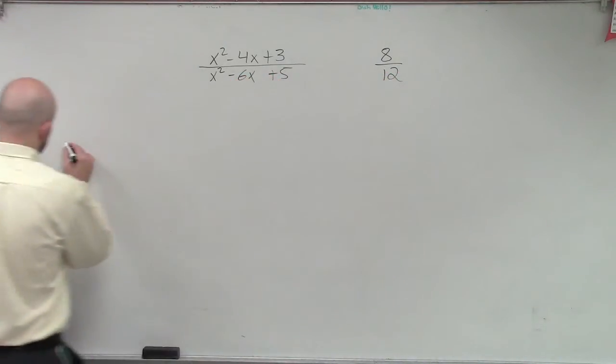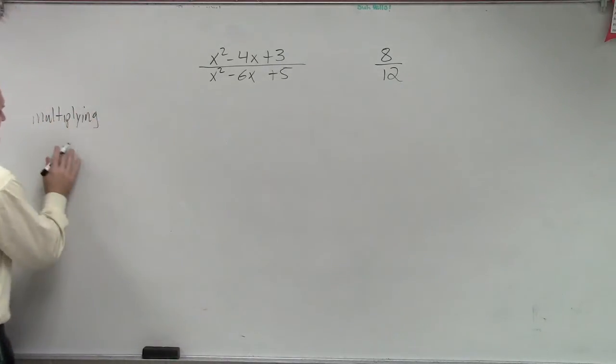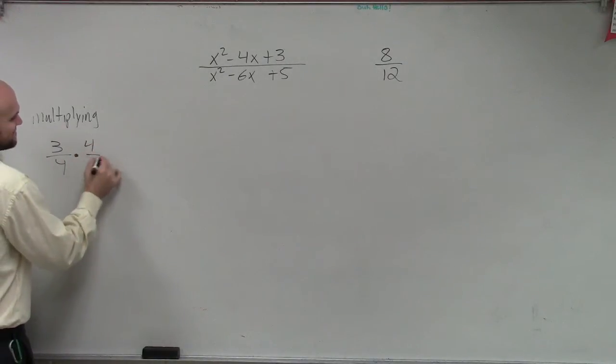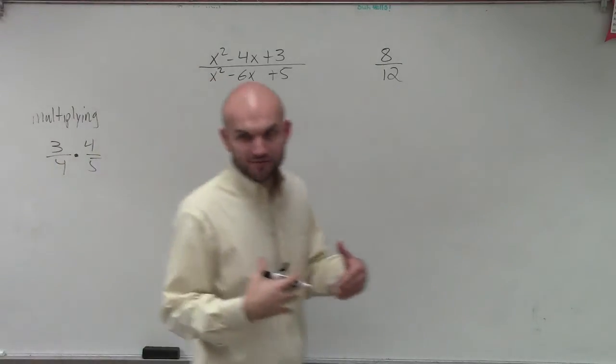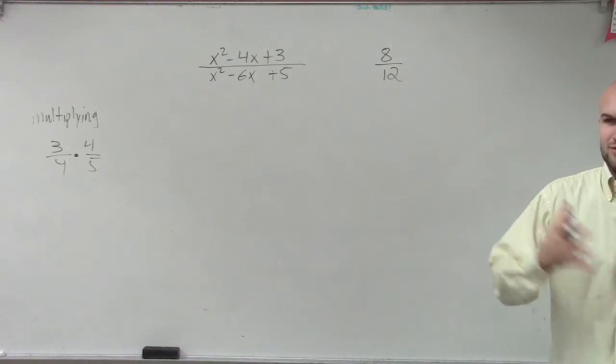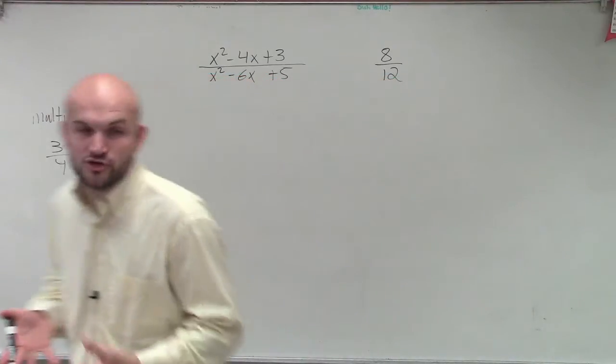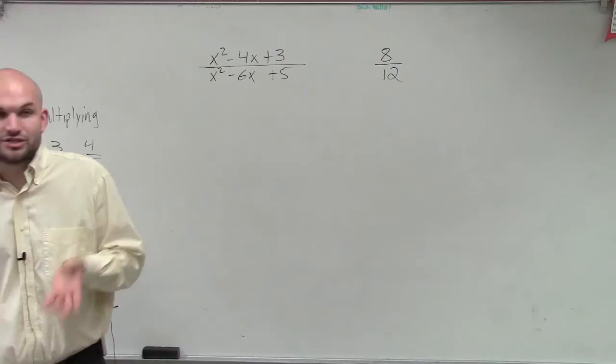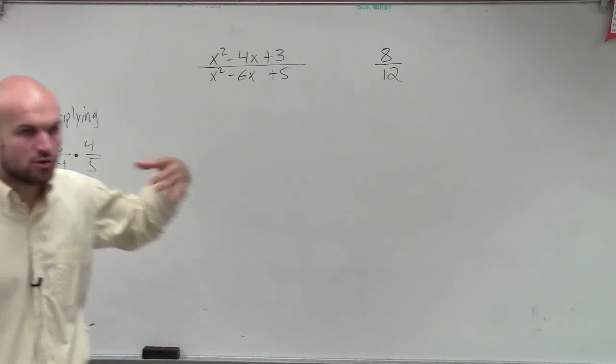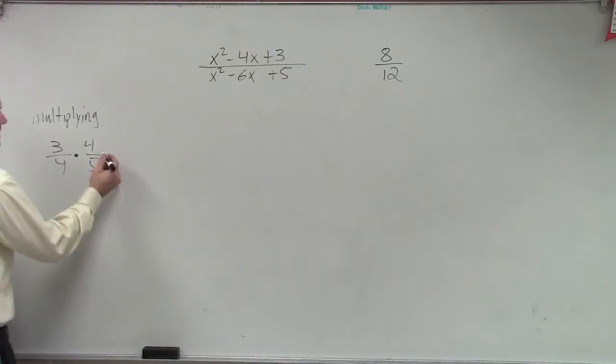All right, so if I had, if I said I wanted to multiply 3/4 times 4/5, right? When we multiply fractions, does anybody remember what you do with the numerators and denominators? You multiply straight across. We don't cross multiply? No, right? Cross multiplication is only used when you have a proportion, meaning a ratio equal to another ratio.